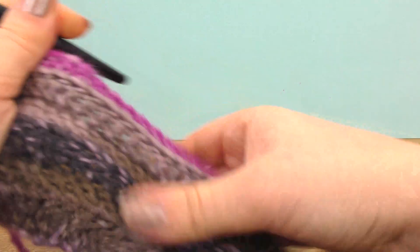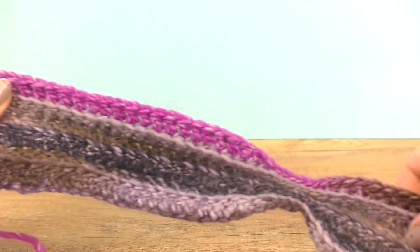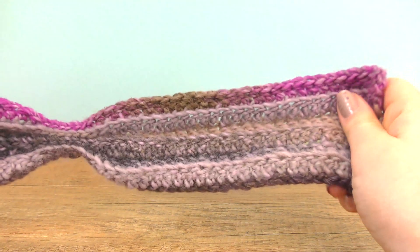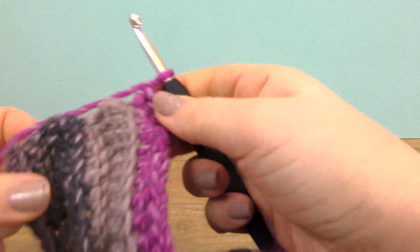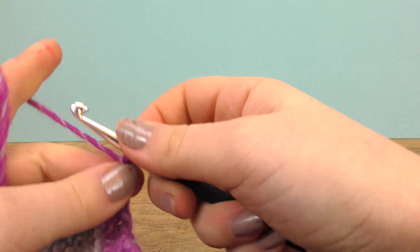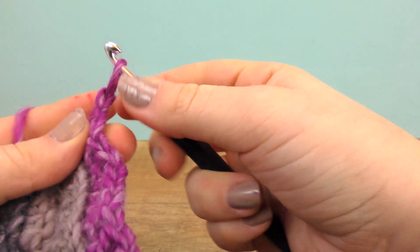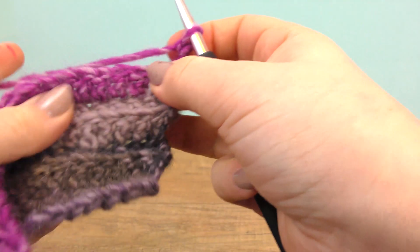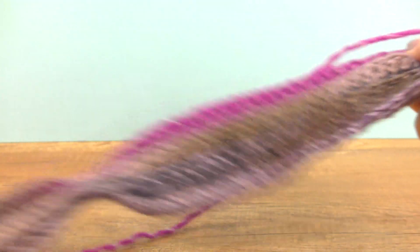Four rows later, we have our headband. Now we do a chain to turn and then the last row I will do in slip stitches in order to get a nice firm ending.